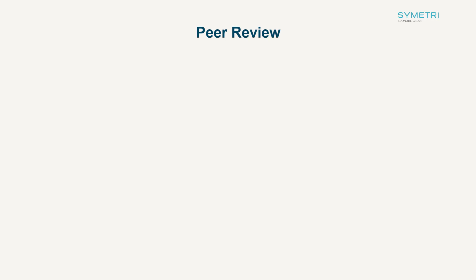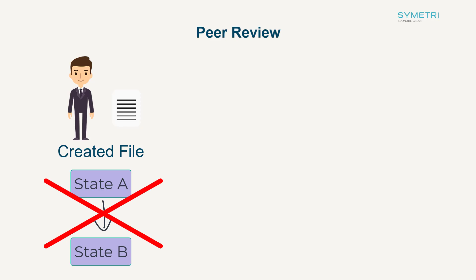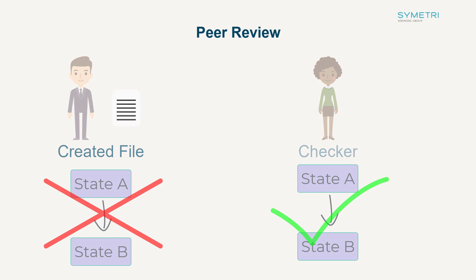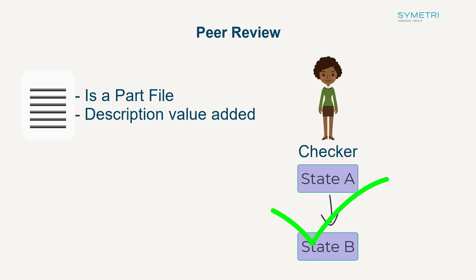Continuing with lifecycles, a new feature has been added for peer review. This allows for a basic four-eyes check on the workflow so that the same user who moved the file into the from-state can't move it to the next state. This can put a step in that will check to ensure that someone else has looked over the file and moved it to the next state change. This can also be configured so that certain custom criteria is met before that state change happens — for example, if the file is a part file and contains a description, it will need to pass the peer review steps.